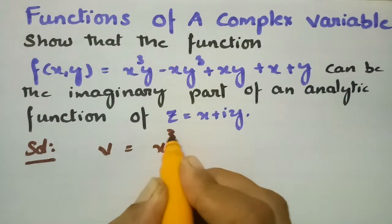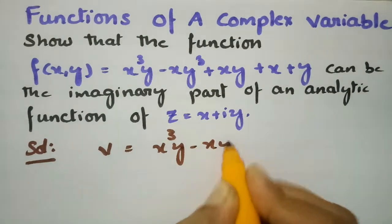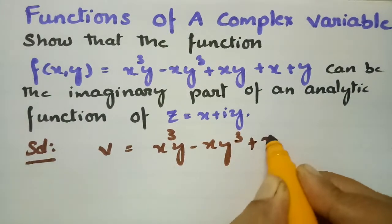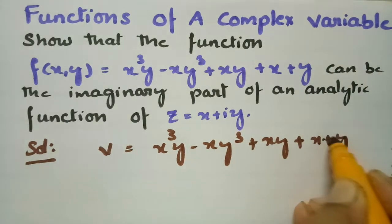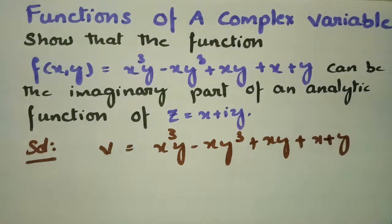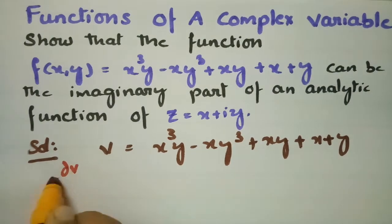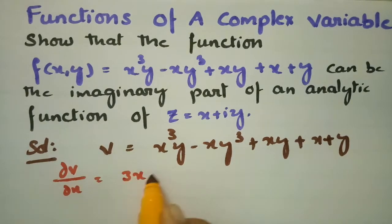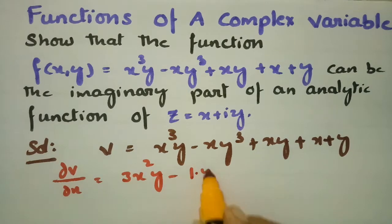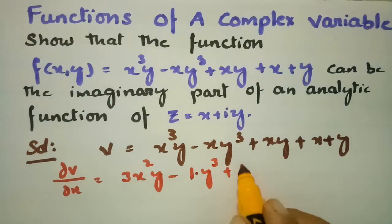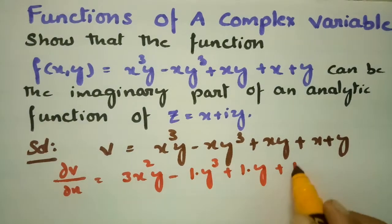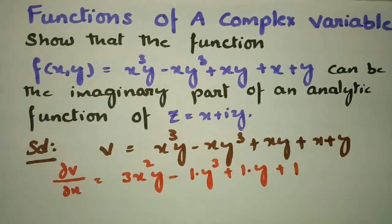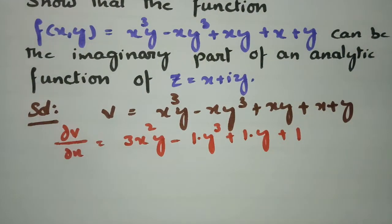First, let us consider the given function. The imaginary part v is equal to x cubed y minus x y cubed plus x y plus x plus y. Now I am going to differentiate with respect to x. For x cubed this gives 3x squared y, for xy cubed this is y cubed, and for xy this is y, and for x this is 1. So this is ∂v/∂x equals 3x²y − y³ + y + 1.